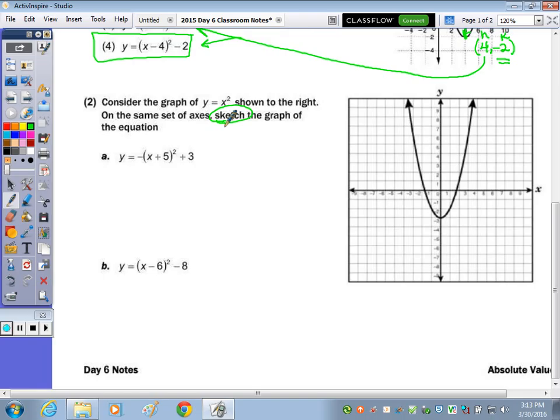Number 2, consider the graph of y equals x squared as shown to the right. On the same set of axes, sketch the graph of the equations. So this is a sketch. We don't need to get out our graphing calculator. We're going to take a look at each by noting the vertex, if it's right side up or upside down. The vertex here, x is the opposite, so negative 5, 3.